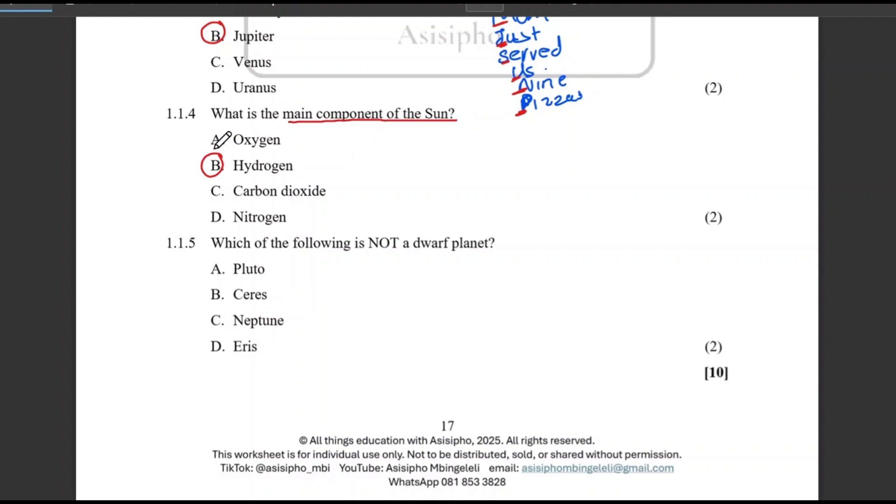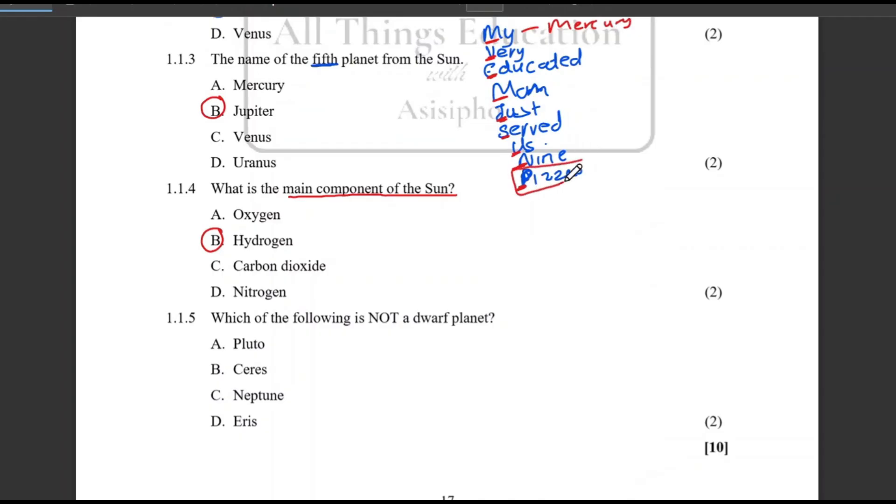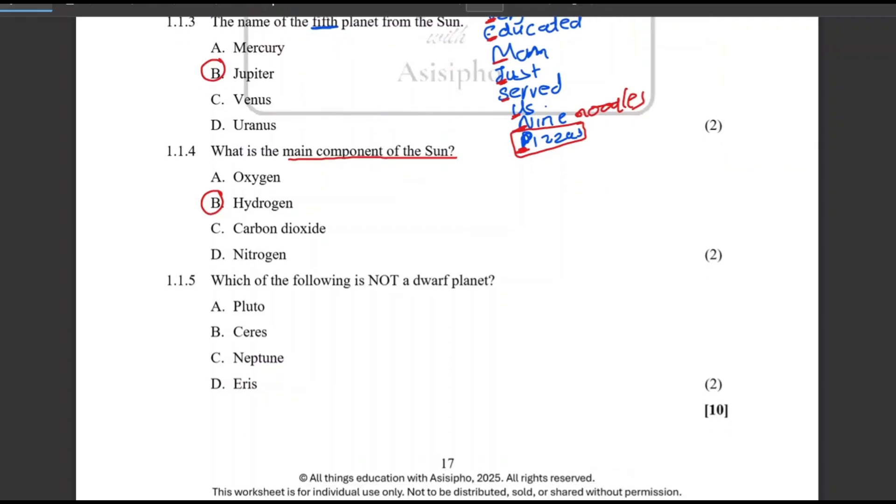Question 1.1.5, which of the following is not a dwarf planet? Remember, I just forgot to emphasize here. You can ignore this one. You can maybe replace the word nine with noodles so that you know not to mention the pizza one for letter P for Pluto as a normal planet, because now it's considered as a dwarf planet. So from the following, which one is not a dwarf planet? We know Pluto is a dwarf planet, Ceres is a dwarf planet, Eris is a dwarf planet. So C is our correct answer because Neptune is not a dwarf planet. Let me know how many marks you got out of 10.